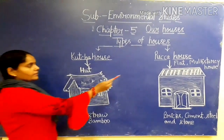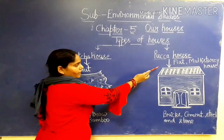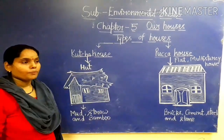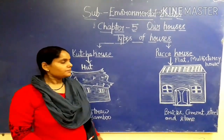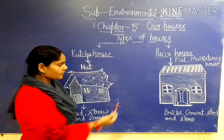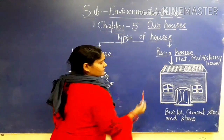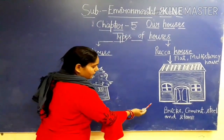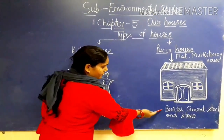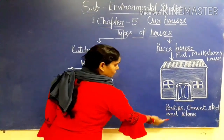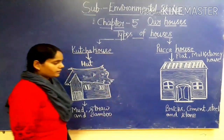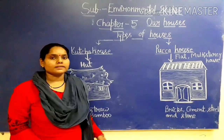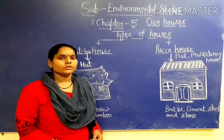The second type is Pakka House, like a flat or multi-story house. They are made up of brick, cement, steel, and stone. They are very strong and they are mainly found in cities and towns.